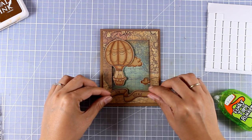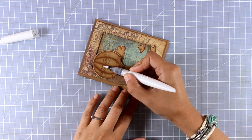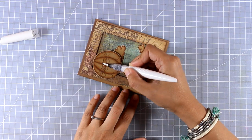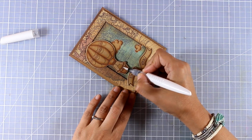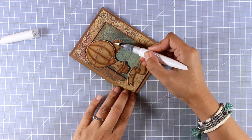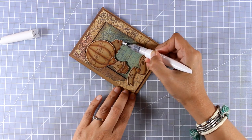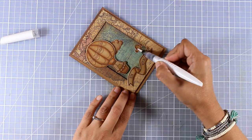Now of course this is totally optional. I just love that touch of shine in different areas of my card. I'm using my shimmer pen and I'm touching up the clouds as well as a few details on top of my hot air balloon.